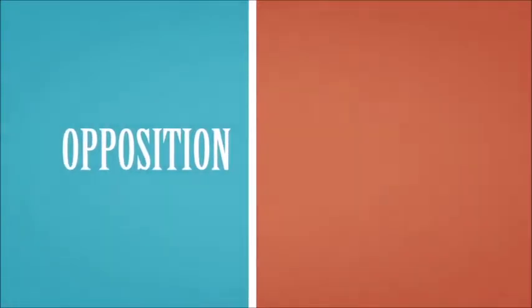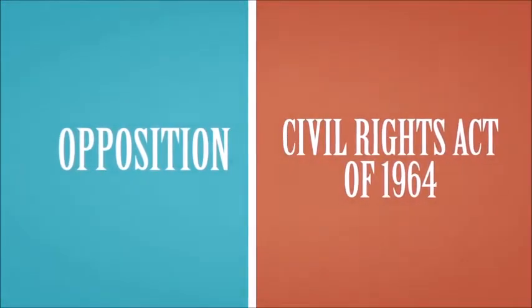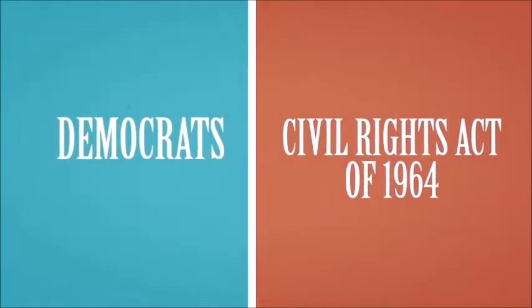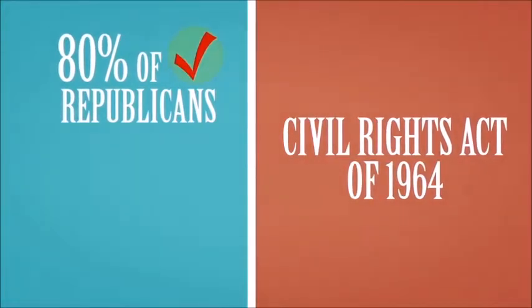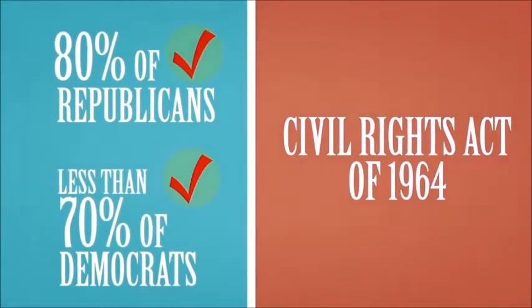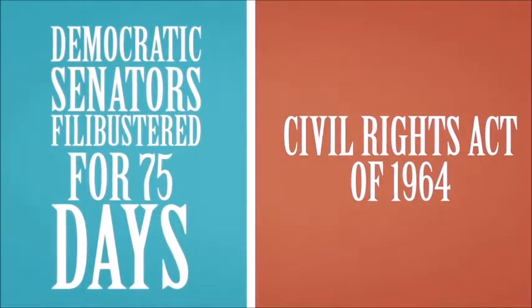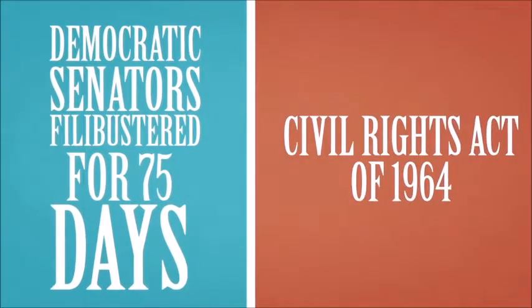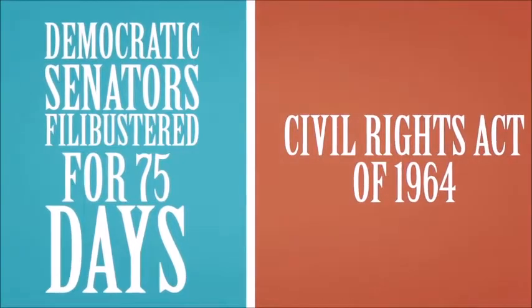A few decades later, the only serious congressional opposition to the landmark Civil Rights Act of 1964 came from Democrats. Eighty percent of Republicans in Congress supported the bill. Less than 70 percent of Democrats did. Democratic senators filibustered the bill for 75 days until Republicans mustered the few extra votes needed to break the logjam.